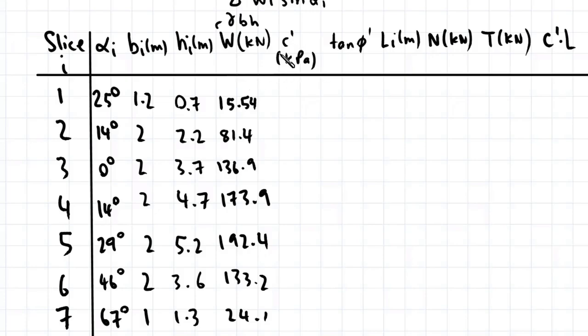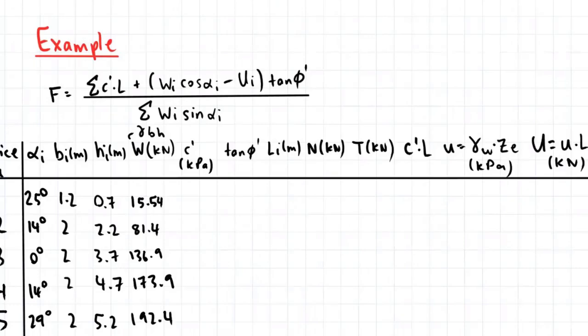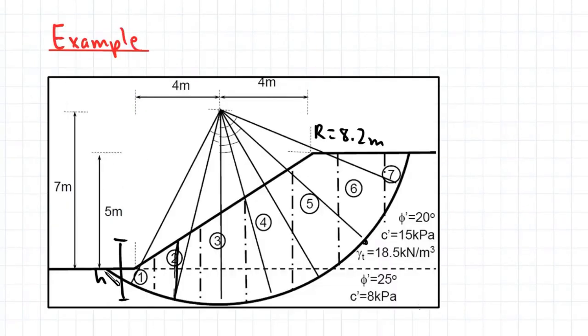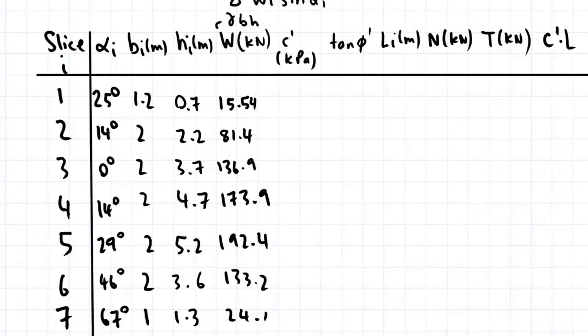So now for the cohesion. And we go back to our picture. So the bases of slices 1 to 5 fall within this bottom soil layer where the cohesion is equal to 8. And for slices 6 to 7, the bases of these slices fall within the top soil layer where the cohesion is equal to 15. So I'll write that in the table like so.